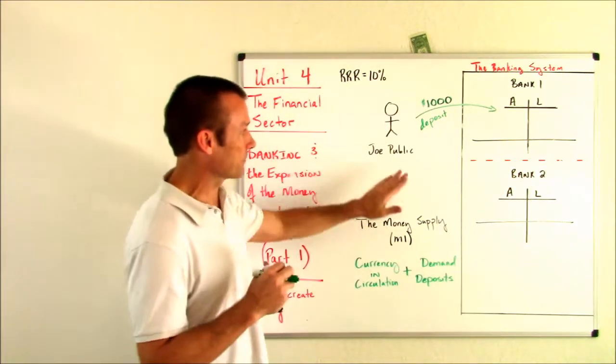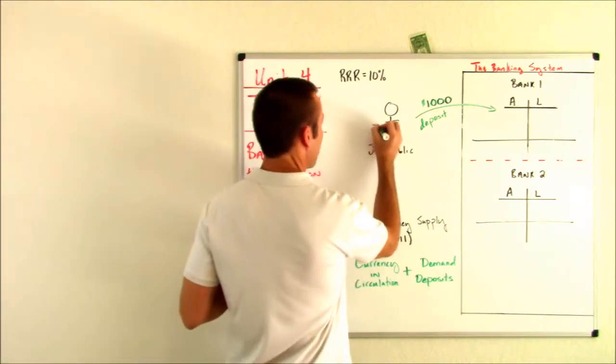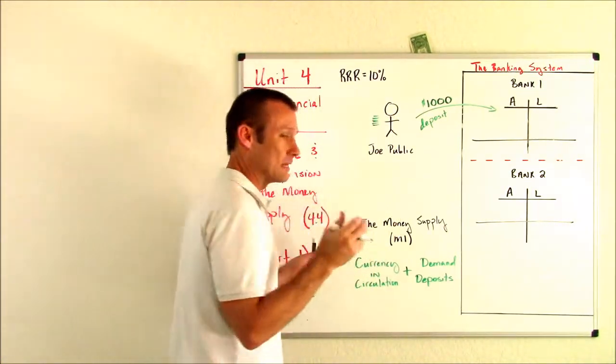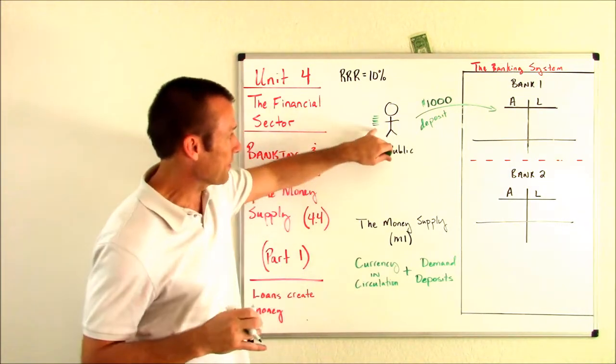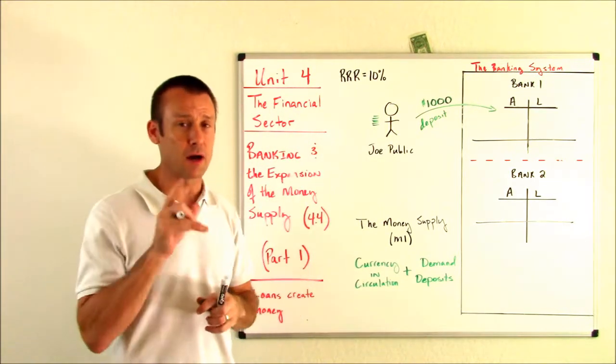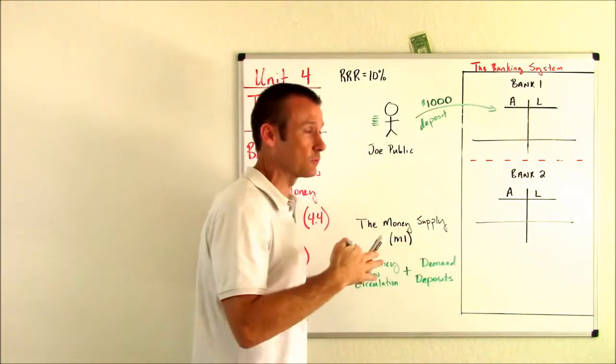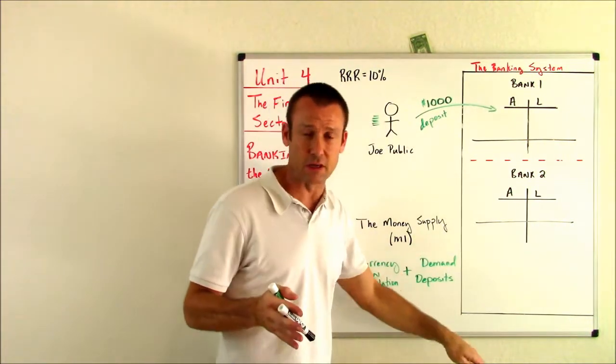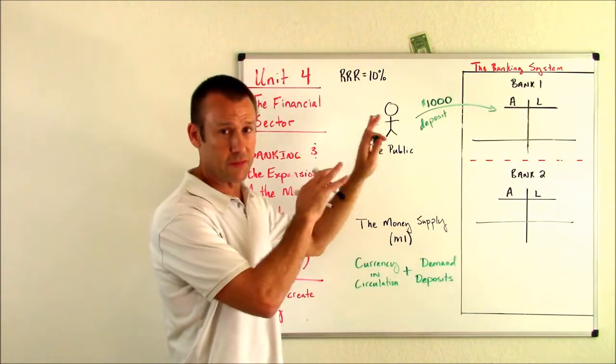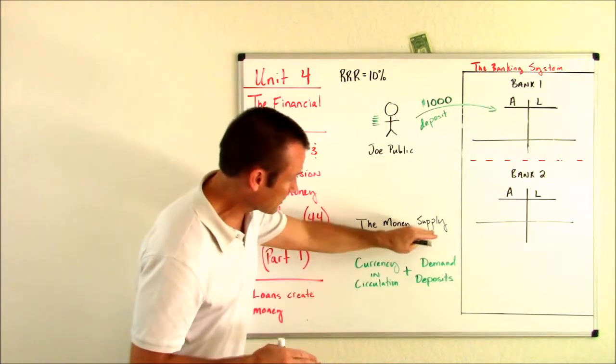I've got this little visual up here. I've got Joe Public. I want you to think of Joe Public right now having $1,000 in currency in his hand. That is currency in circulation. So that $1,000 is part of the money supply, but he's about to deposit it into bank one, which is part of the banking system, as is bank two and any other banks. Just to remind you of a few things, the money supply is M1.